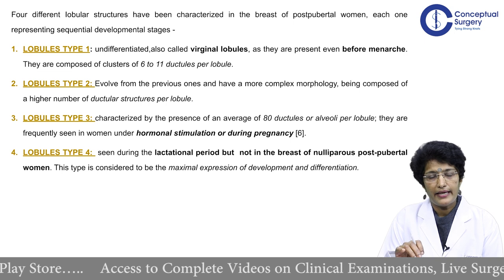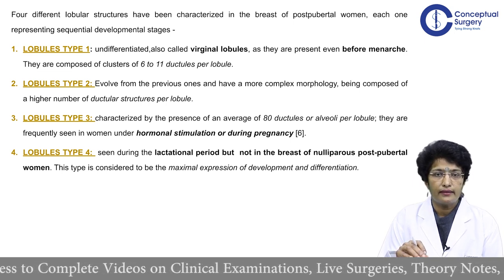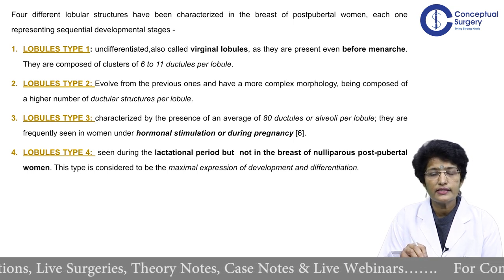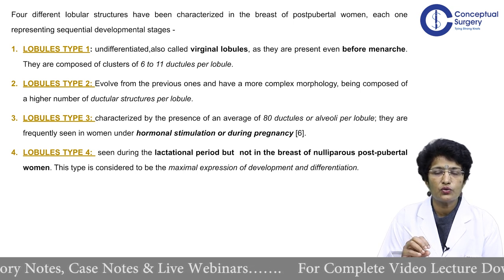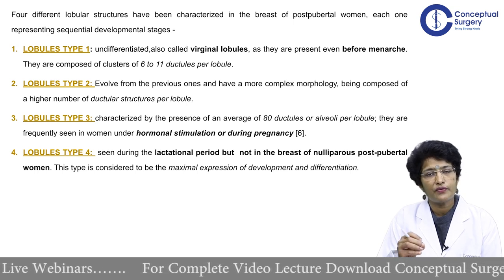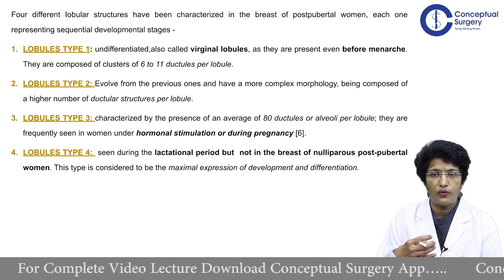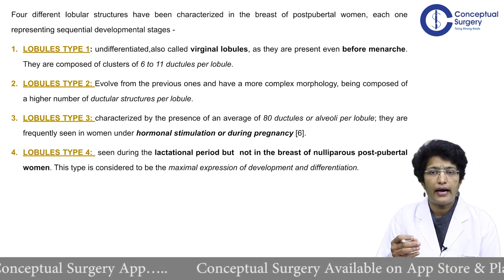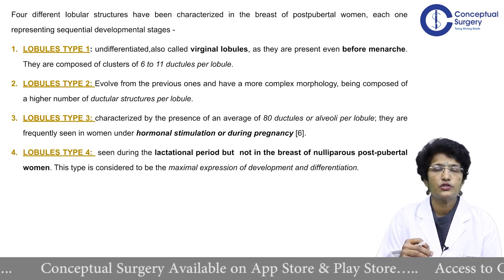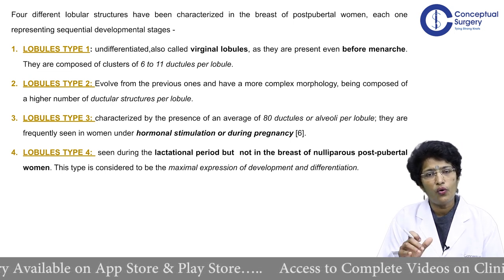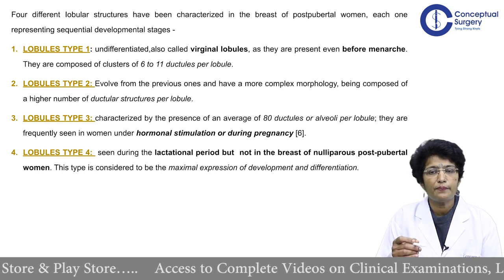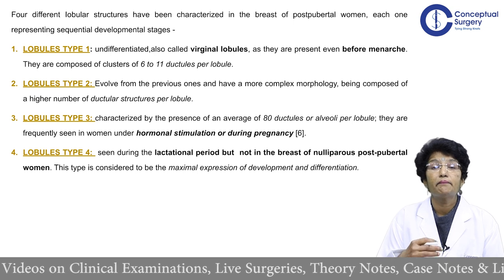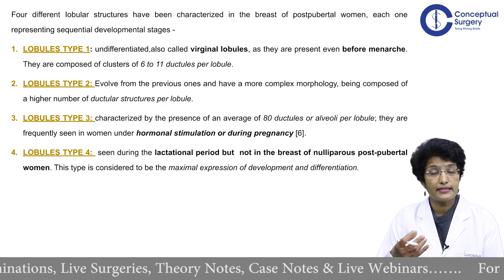Four different lobular structures have been characterized in the breast of post-pubertal women, each representing sequential developmental stages. Lobule type 1 are virginal lobules present even before menarche, composed of about 6 to 11 ductules per lobule. Type 2 evolves from lobule type 1 with more complex morphology and higher ductule numbers. Lobule type 3 has an average of about 80 ductules or alveoli per lobule and is frequently seen during hormonal stimulation or pregnancy. Lobule type 4 is the functional unit seen during lactation but not in nulliparous post-pubertal breasts, representing the maximal expression of development and differentiation when the breast prepares to lactate.